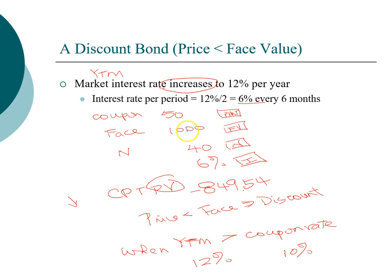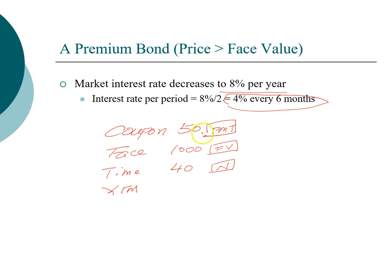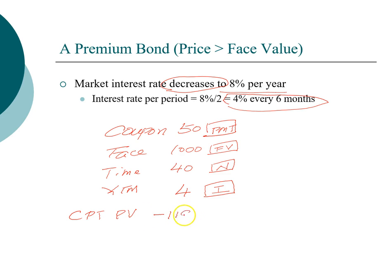Using the same bond — same coupon, same face value, same time to maturity — let's see what happens when the market interest rate decreases. Market interest rate goes down from ten percent to eight percent per year, which is four percent every six months. The coupon payment is still fifty dollars, face value is a thousand dollars, and 40 payments remain. When interest rate goes down, we expect present value to go up. The new price is eleven hundred and ninety-seven dollars and ninety-three cents.